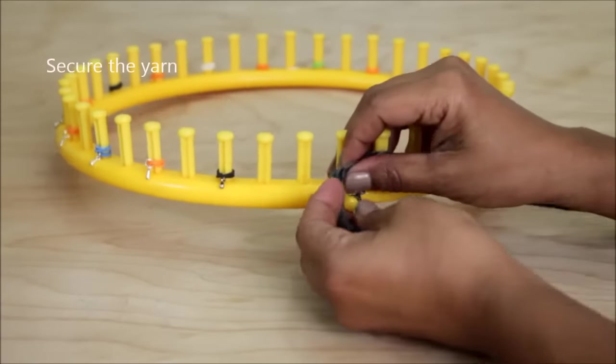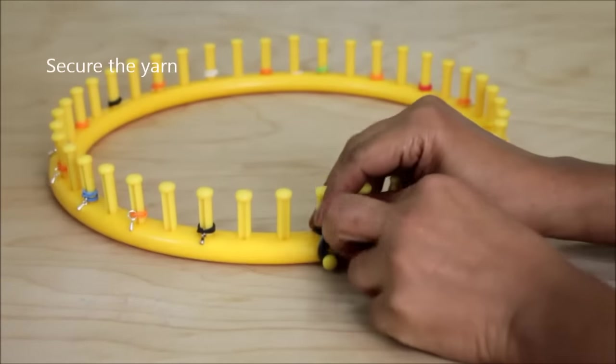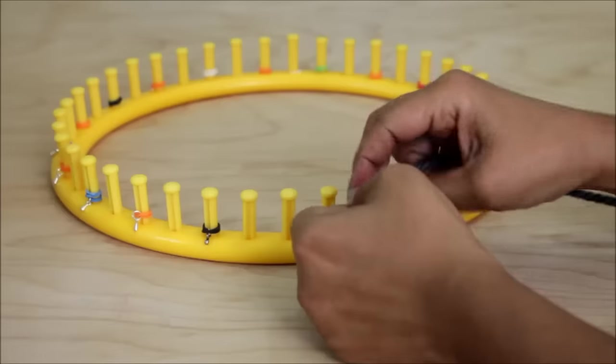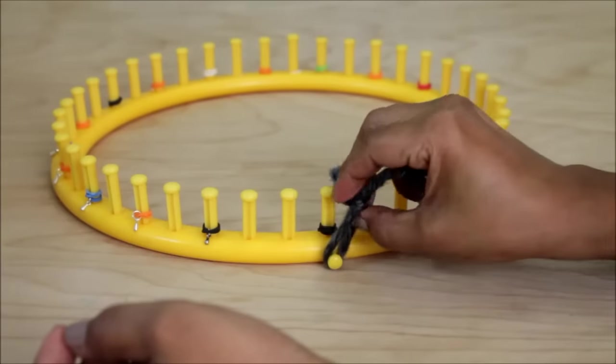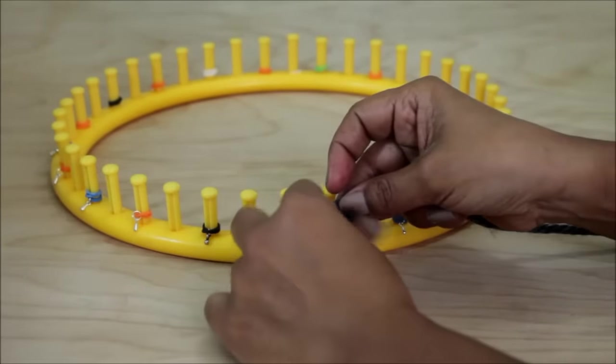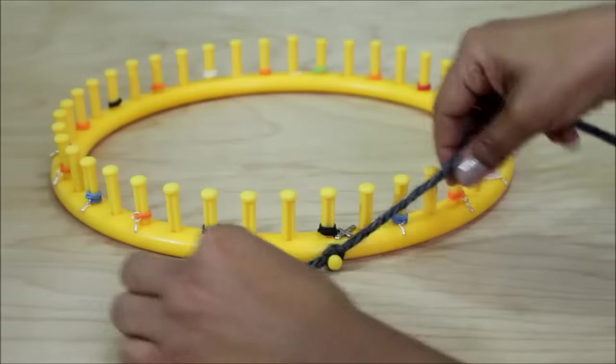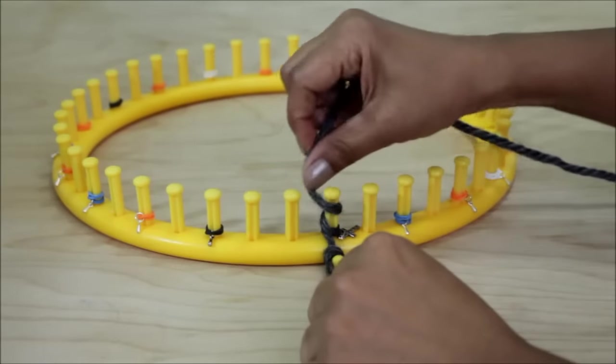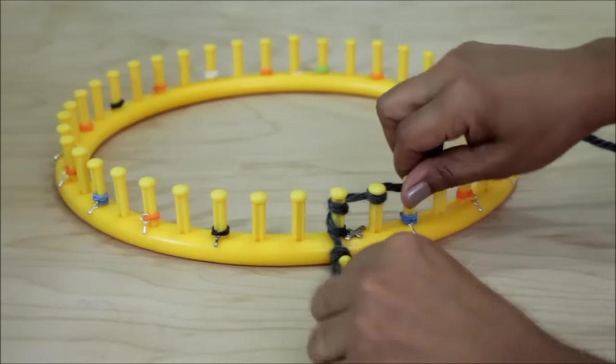Alright guys, let's begin. First, secure your yarn to the anchor peg. I'm going to use a simple knot. You can use a slip knot if you'd like. And then take your yarn between the first and last peg and we're gonna wrap every peg.